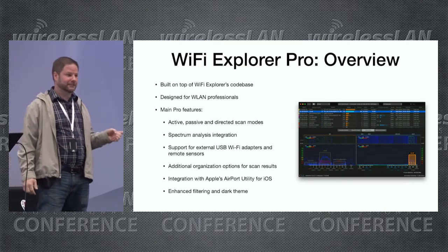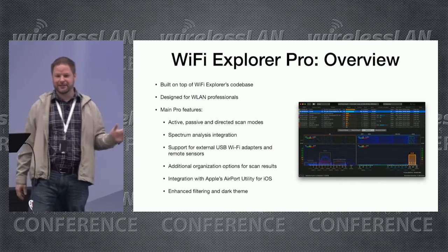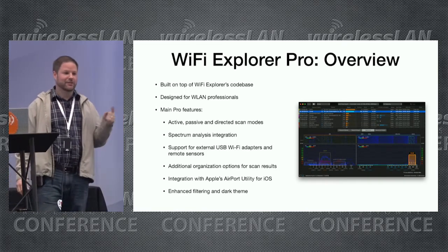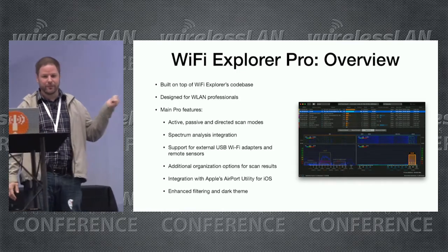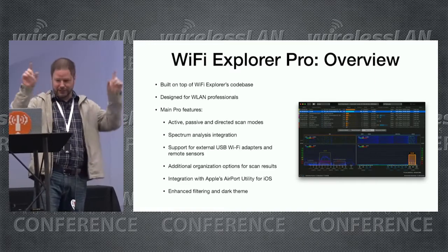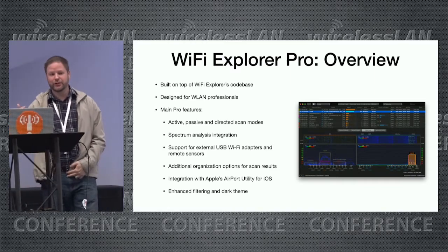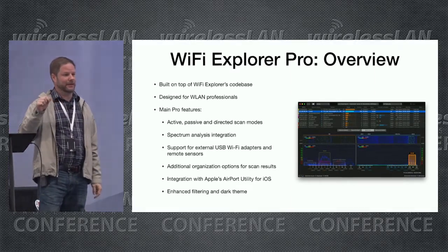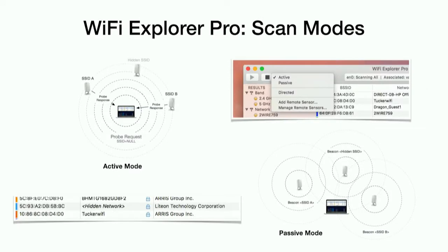It has spectrum analysis integration, supports external USB adapters with a hack I came up with, and has support for remote sensors — people in Jerry's deep dive tried the Nano Pi as a remote sensor for Wi-Fi Explorer Pro. It has a different way of organizing the results list of networks, adds support for the Airport Utility app that Eric showed on Tuesday, and some enhanced filtering as well.